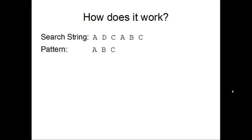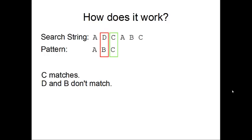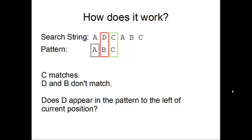So what if the pattern is not at the beginning of the string? Again we have an example. C and C match, but D and B don't. What we do next depends on whether the mismatching character in the search string does appear in the pattern to the left of the current position. In this case, does D appear in the pattern to the left of B? Here it does not, so we can shift the pattern to the right by the whole length of the pattern.